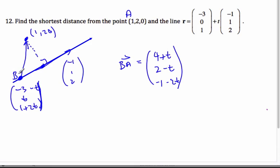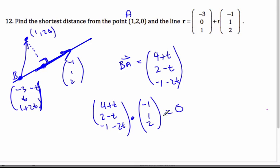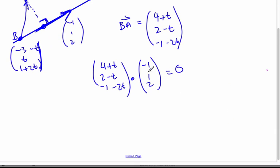Now, when I take this vector and dot product it with the direction vector, I want it to be perpendicular, and that will place it here. And so if I go 4 plus t, 2 minus t, negative 1 minus 2t, dot it with the direction of negative 1, 1, and 2, I hope to get 0. And when I do get 0, it makes them perpendicular, which will be the shortest distance.